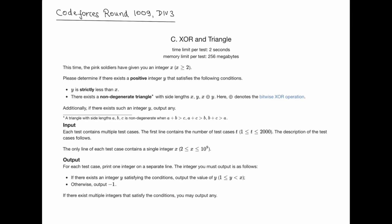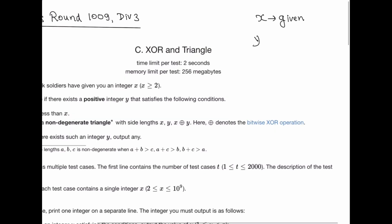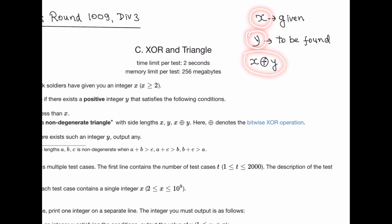Today we are going to solve Codeforces Round 1009 Div 3, Problem C: XOR and Triangle. The problem states: given an integer x, determine if there exists a positive integer y such that y is strictly less than x, and there exists a non-degenerate triangle with side lengths x, y, and x XOR y. Basically, we have to find a value of y given x such that these three values can form a triangle.